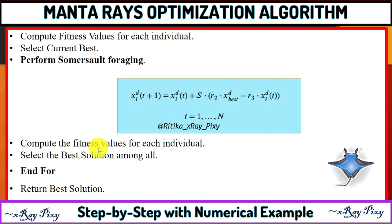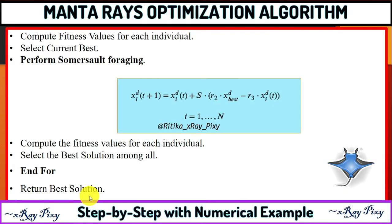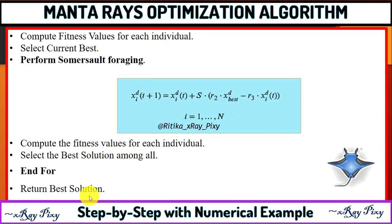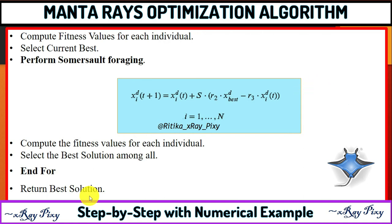After that, again calculate the fitness value for each individual and select the best solution. We repeat this loop until the stopping criteria is matched. Once the stopping criteria is satisfied, return the best solution from the previous iteration and display the best solution, its fitness value, and its position. That's all about this video — if you have any questions, comment below, and thanks for watching.